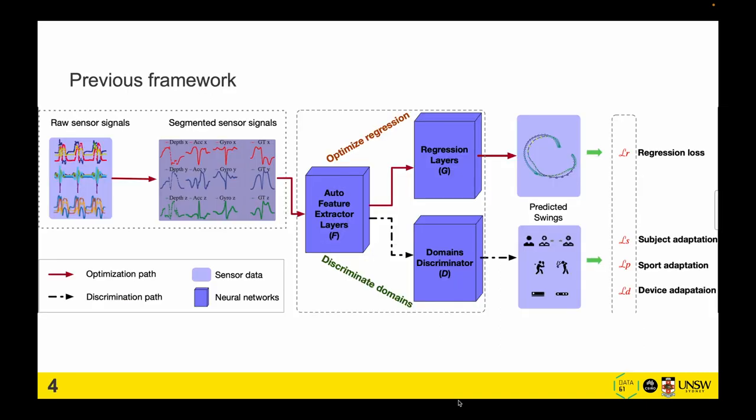So we propose SwingNet. SwingNet includes three blocks: auto-feature extractors, regression layer, and domain discriminator. Auto-feature extractors try to learn the common features for different domains, and the regression layer tries to improve prediction accuracy, while the domain discriminator tries to minimize the differences among subjects, sports, and devices.